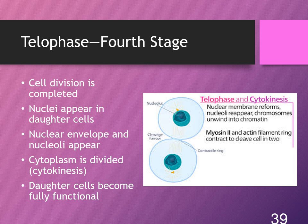During the fourth and final stage — telophase — cellular division is now complete. There are two exact daughter cells. Nuclei appear in the daughter cells, the nuclear envelope appears, and cytokinesis has taken place, meaning the cytoplasm has divided. These cells are now completely functional and enter the interphase stage.